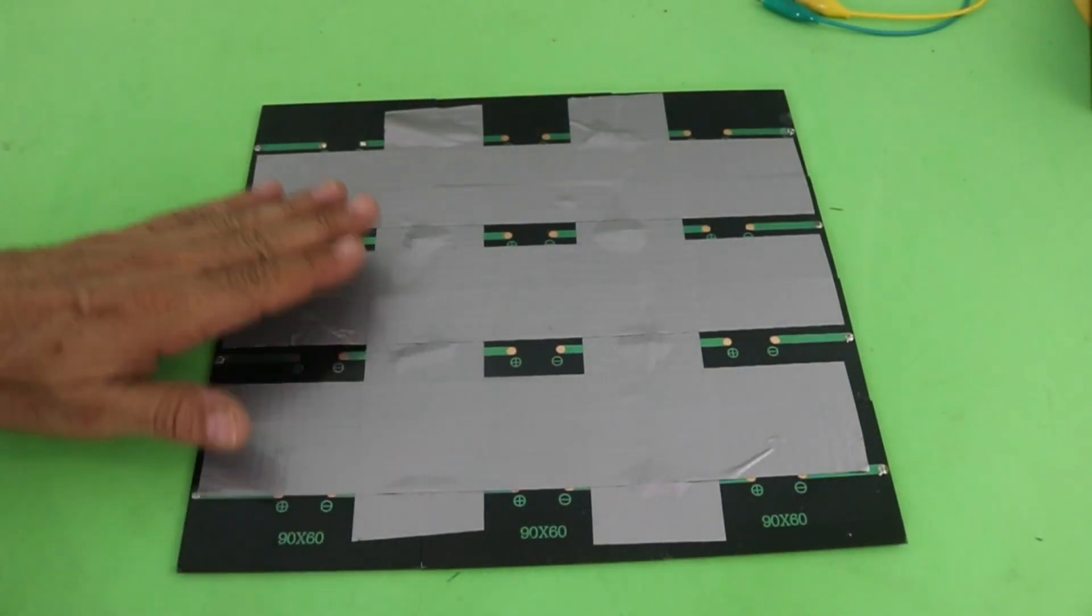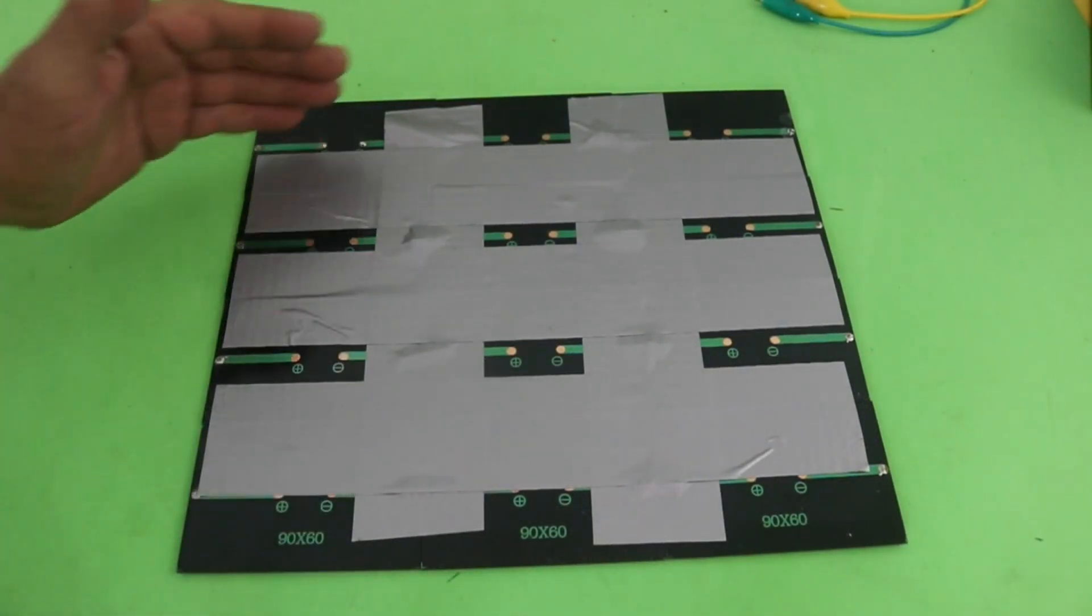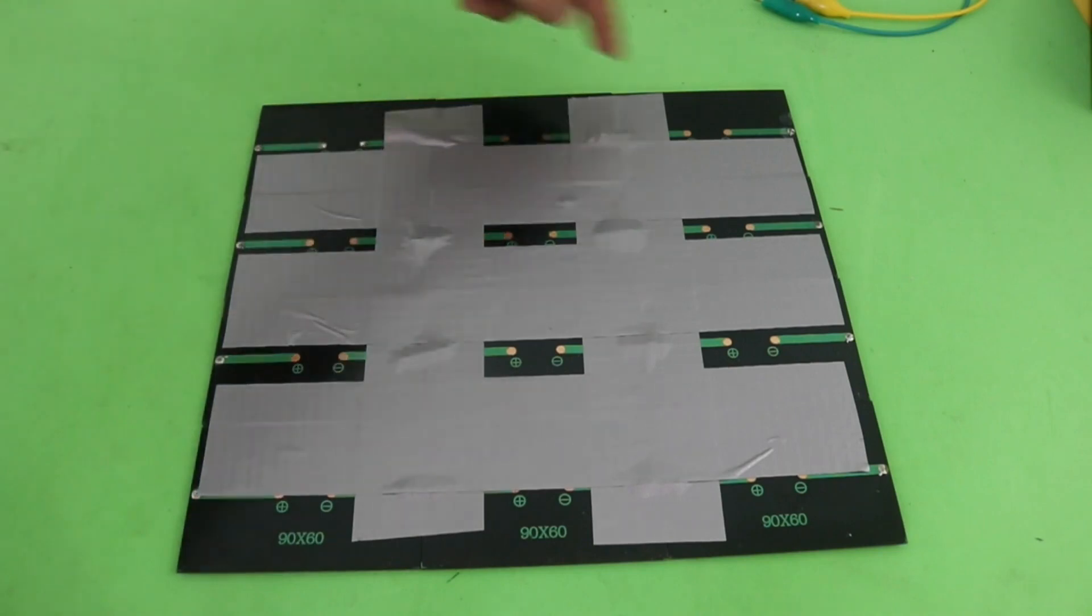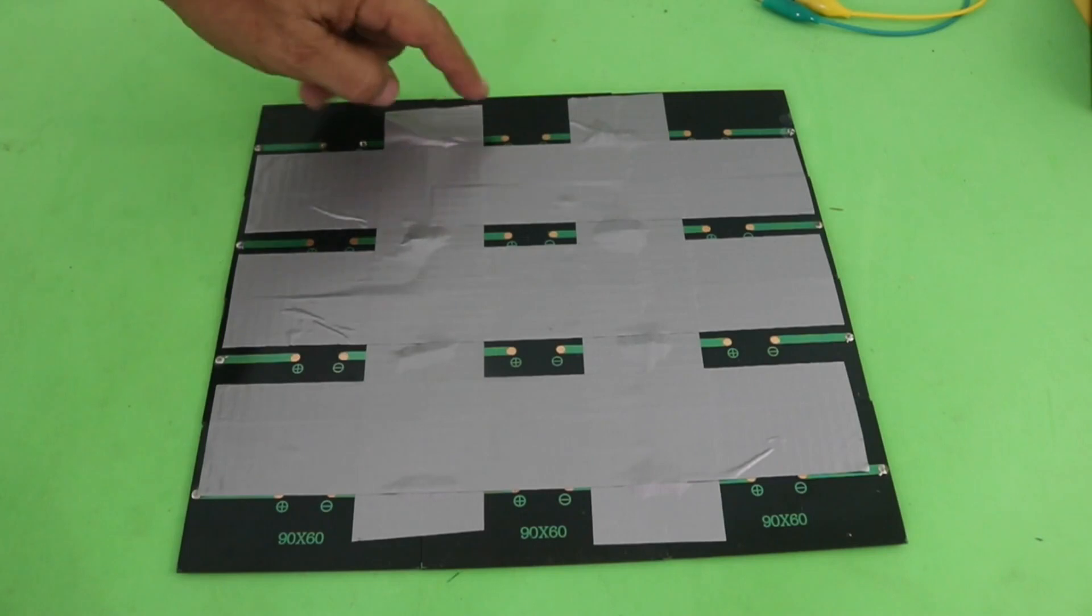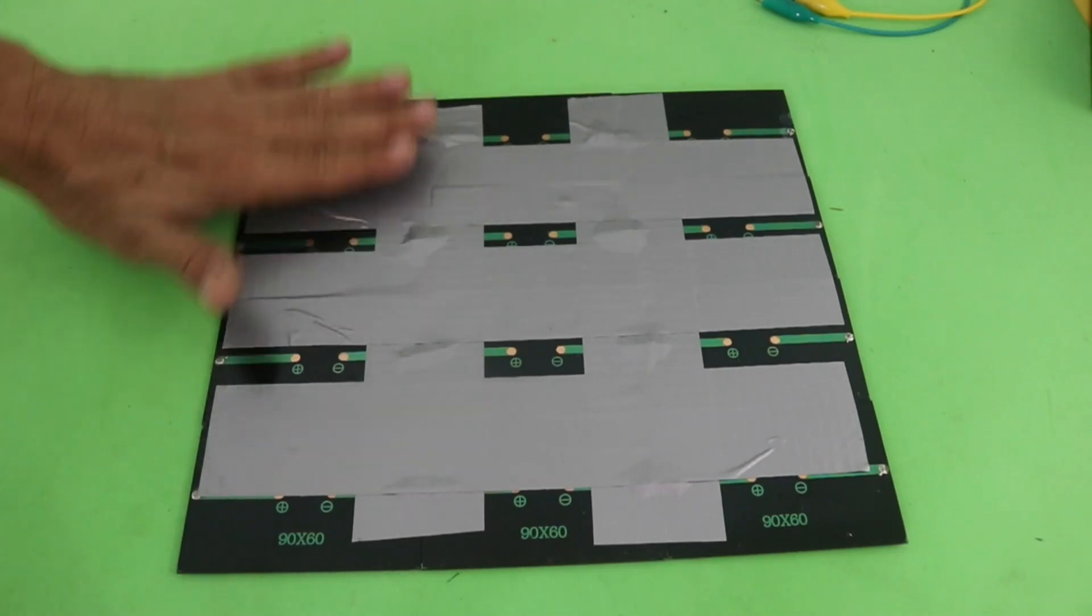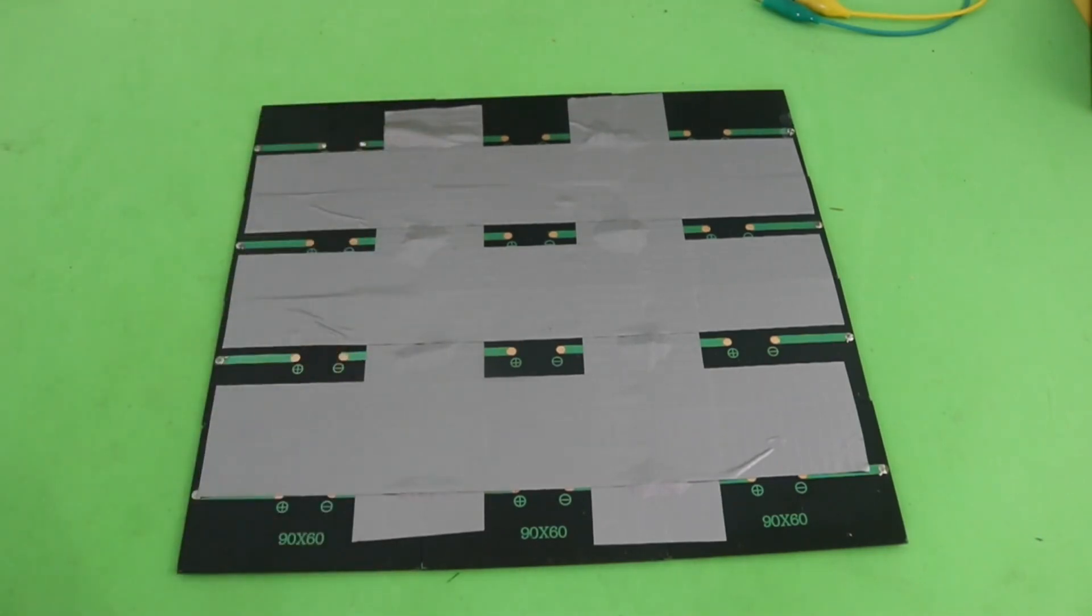Okay, here I have the 12 cells. There are four rows and each row has three cells connected in series. Therefore we have around 20 to 21 volts in each of the rows and the rows will be connected in parallel.